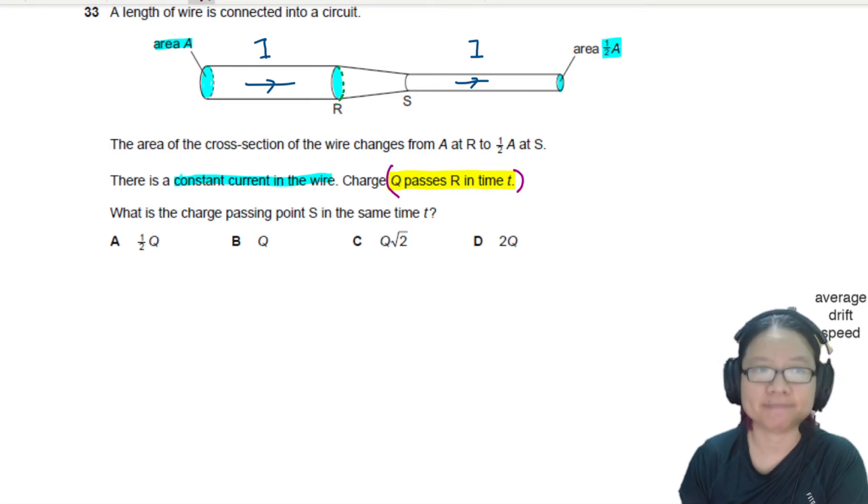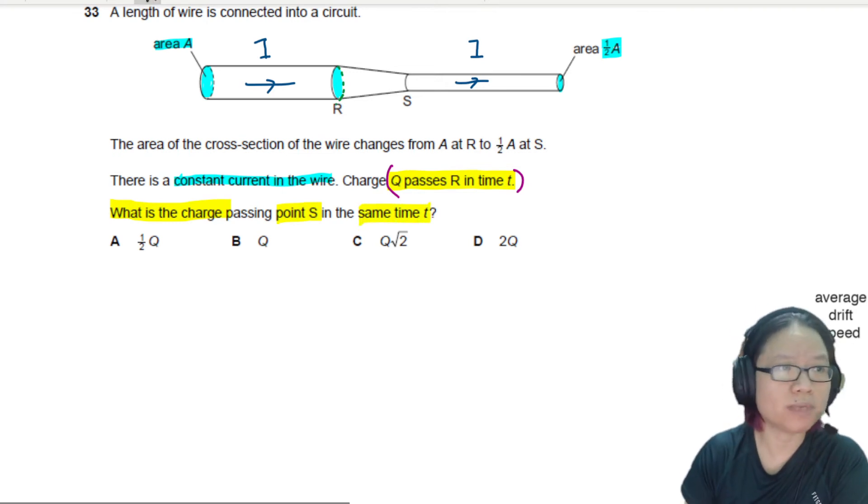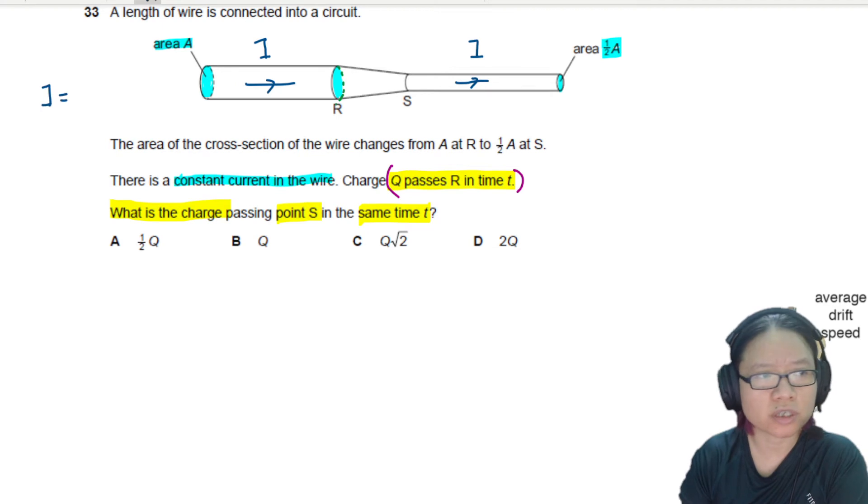in time t. The question is asking us what is the charge passing point S in the same time? So immediately your brain goes like oh I need to use the drift velocity equation...